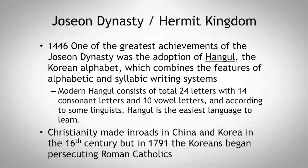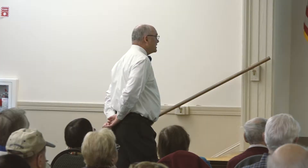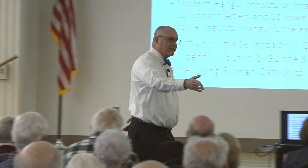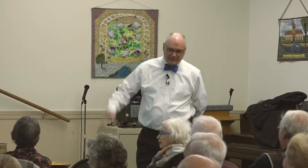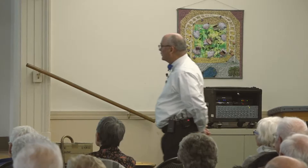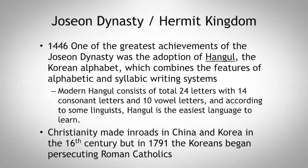One of the greatest achievements of the Joseon Dynasty was the adoption of Hangul, the Korean alphabet, in 1446, which combines the features of alphabetic and syllabic writing systems. Modern Hangul consists of 24 letters — 14 consonant letters and 10 vowel letters. According to some linguists, Hangul is the easiest language to learn. There's a quote that an intelligent man can learn Hangul in a matter of hours, and an ignorant person could learn Hangul in two weeks. It's considered one of the most logical writing systems in the world.